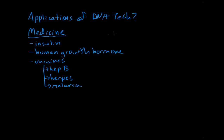Those are some applications of DNA technology in medicine. Another cool application of DNA technology is in solving crimes — in forensics. There are parts of the genome known as non-coding regions, and these regions can help forensic scientists identify specific individuals. They can look at things like short tandem repeats, or STRs.